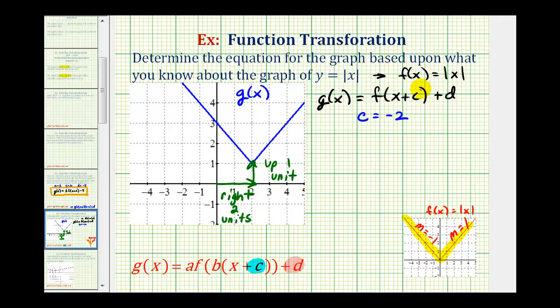We do have to be careful about the sign of c, because one common error is to assume if we're shifting right, c will be positive, but that's actually not the case. If c is negative, it's a shift right. If c is positive, it's a shift left.